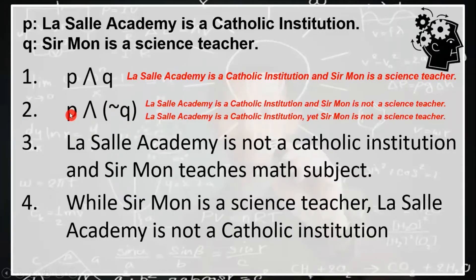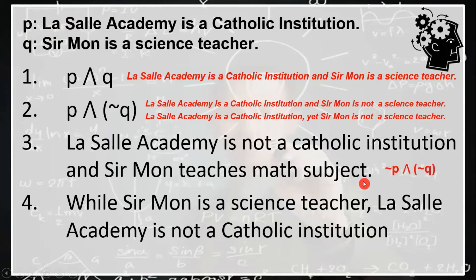When you symbolize propositions, you need to put proper punctuations and negation if necessary — similar to how in math we use parentheses for negative numbers to avoid confusion. In logic, we also need an order of operations, which is why we use parentheses. For number 3: LaSalle Academy is not a Catholic institution (negating P), and Sermon teaches math subjects (negating Q), symbolized as not-P ∧ not-Q. For number 4: While Sermon is a science teacher, LaSalle Academy is not a Catholic institution, symbolized as not-P ∧ Q.